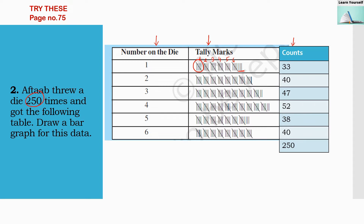For the second observation, there are 8 groups of five, so 8 into 5 equals 40. I have noted down all the counts for all the tally marks. You have to make sure that the addition of all counts should be 250. Once you are done with your counts, check that they must add up to 250. Now the next thing is to draw a bar graph for this data.